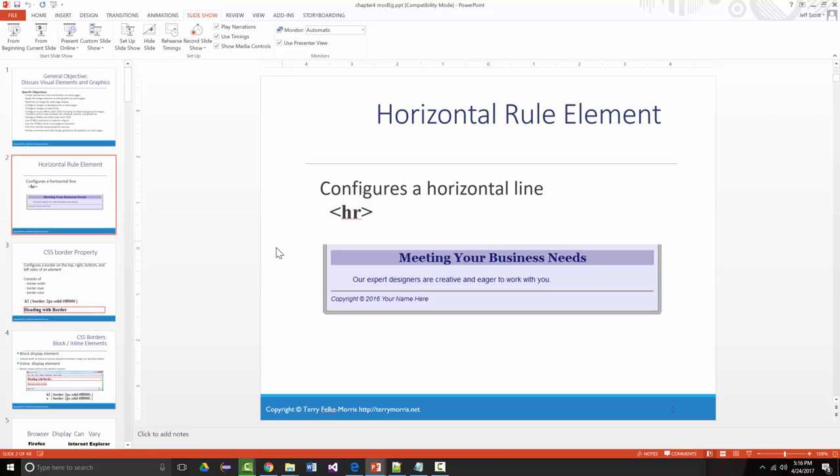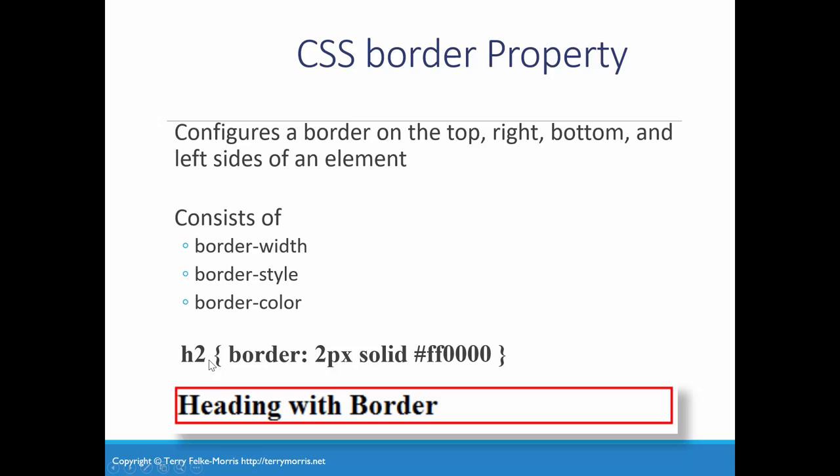The horizontal rules are pretty self-evident. It configures a horizontal line. By default that line is 100%, but you can change the percentage on it if you want to.